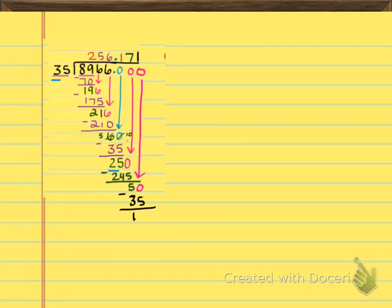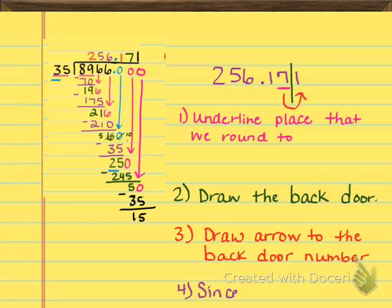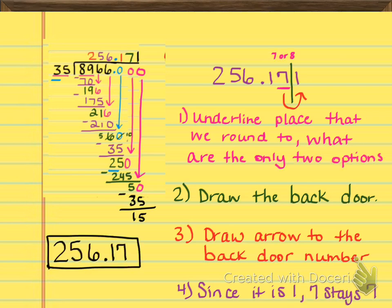So now that we're finished with the problem, on the next page, you're going to see the finished product here. So we're going to underline the 7 because that's the place that we're rounding. Then we're going to draw the back door and then we're going to draw the arrow to the back door number. And since it is a 1, 7 stays a 7. So up here at the top underneath number 1, it says what are the only two options? That 7 or 8, you can see right here that I'm talking about. You really should decide ahead of time what that 7 can be so that you don't get confused when you're actually rounding. Because sometimes when there are a lot more numbers on the end, it can get confusing. So now because that's a 1, the 7 will remain a 7. And the answer to this problem is 256.17.